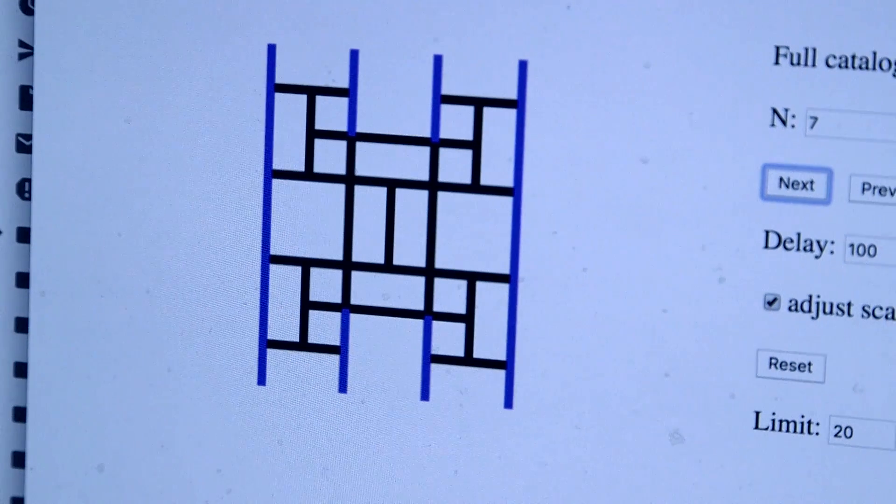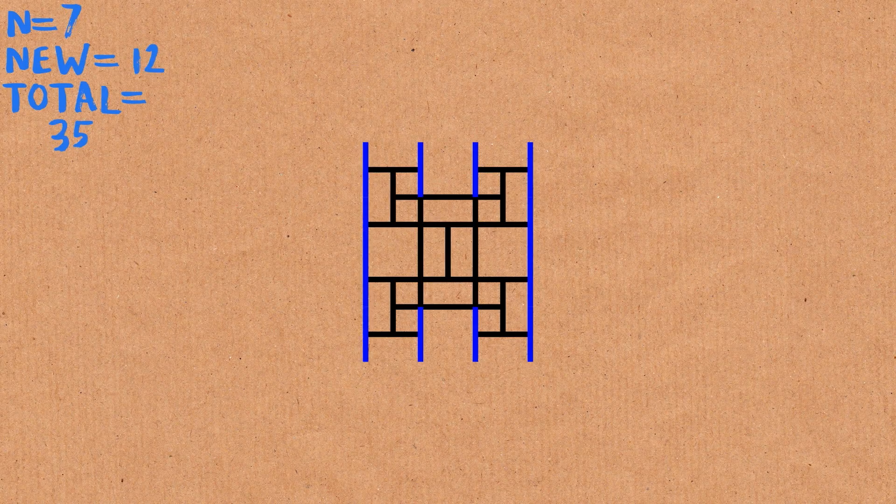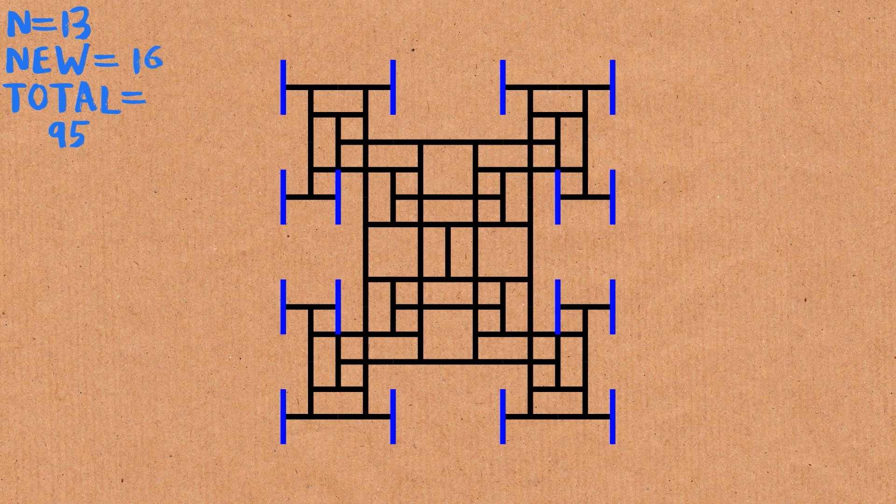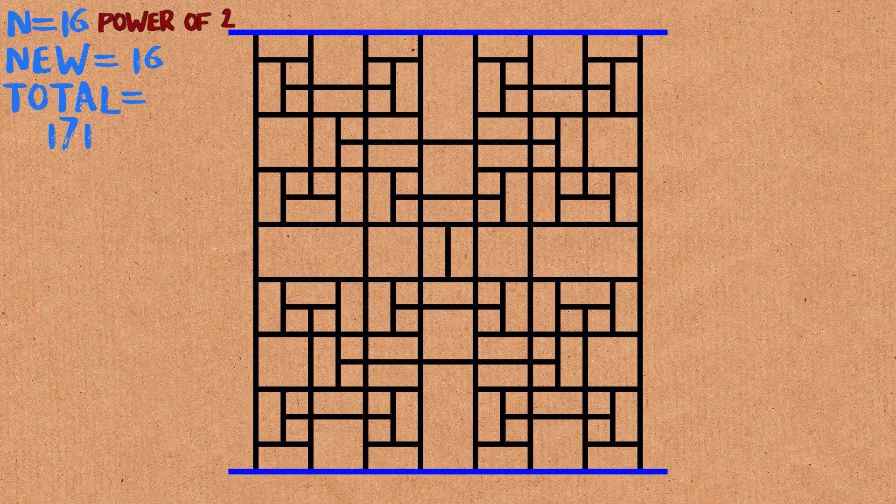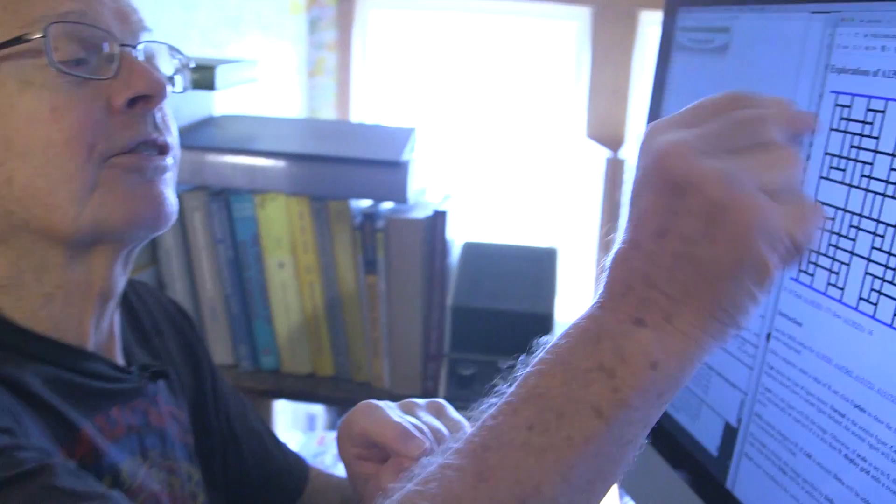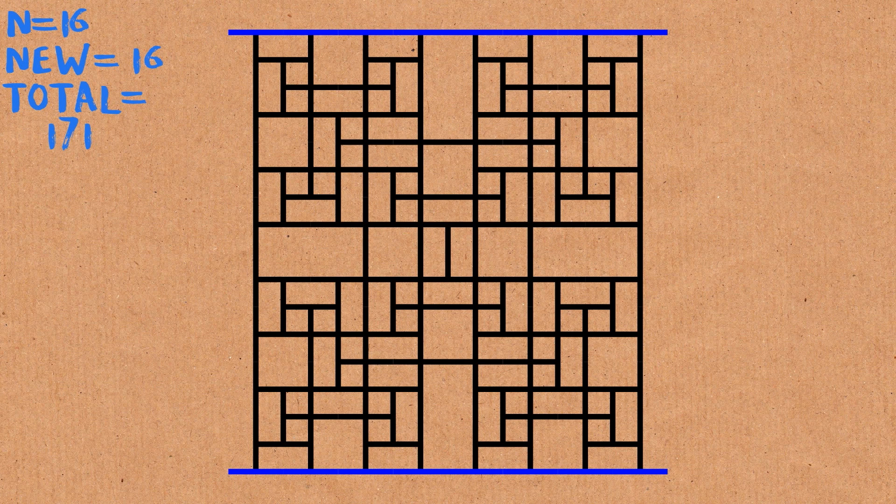And so on. So let's watch it run. We see it growing. When we get to power of two, we notice something special happens. We have essentially a square that's full of toothpicks. There's no room in the middle to add any more toothpicks.